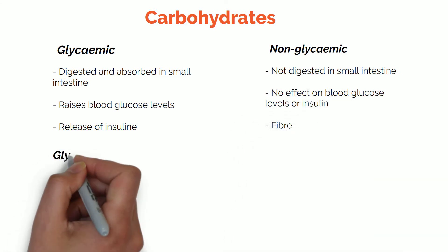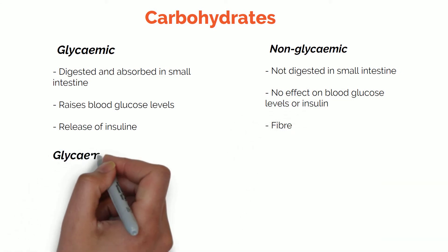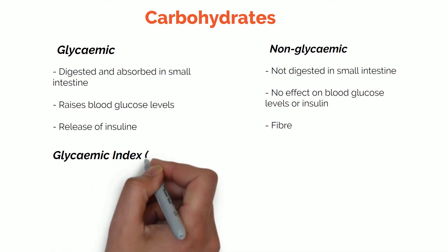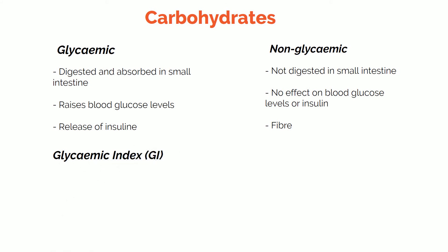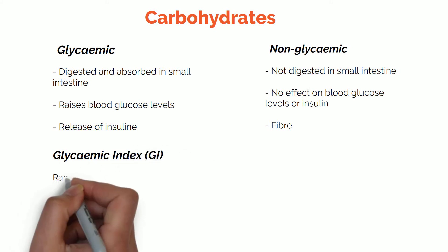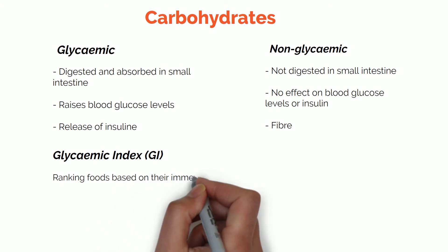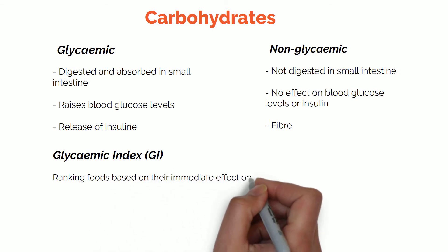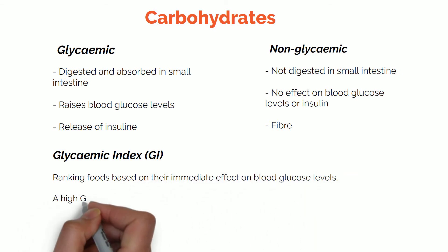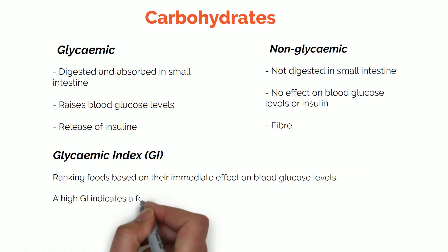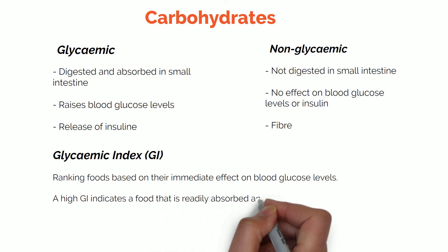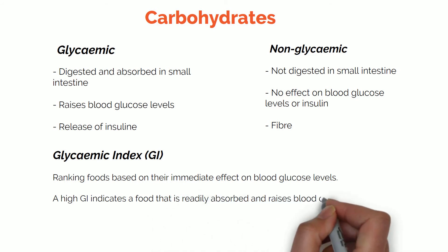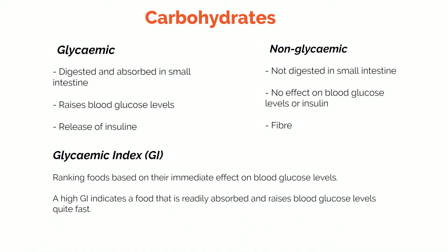A concept that is very important when we talk about carbs is the glycemic index, or GI. This is a way of ranking foods based on their immediate effect on blood glucose levels. A high GI indicates a food that is readily absorbed and raises glucose levels quite fast, and vice versa. Here is an example of some foods organized by their GI, from higher to lower.